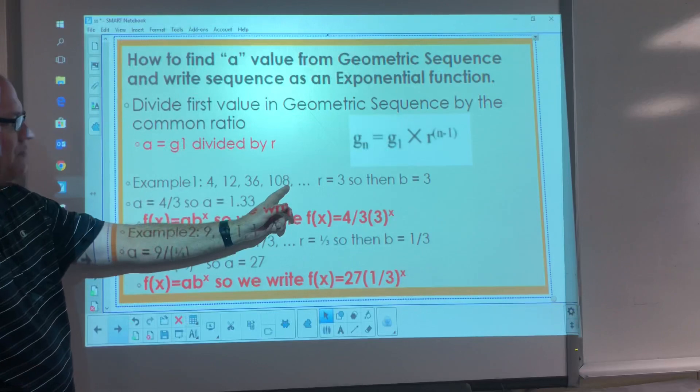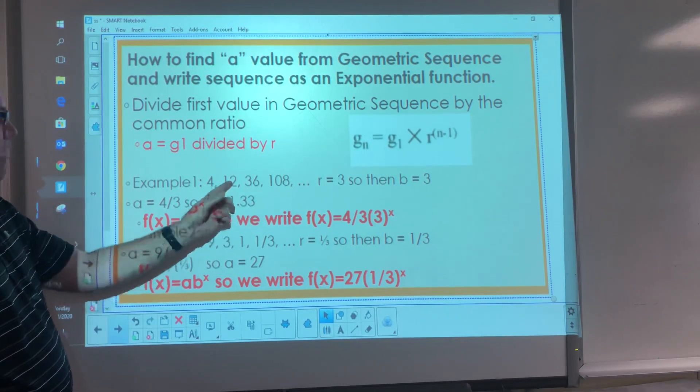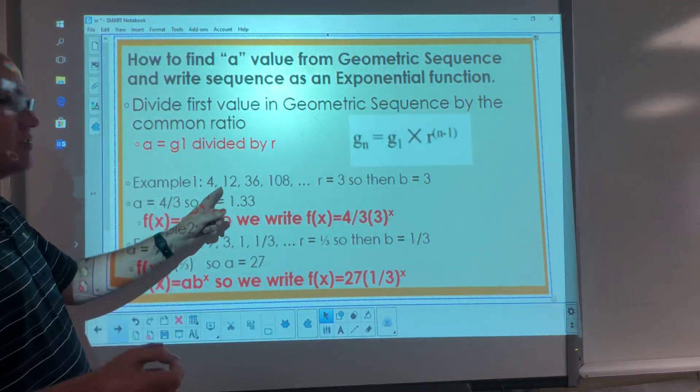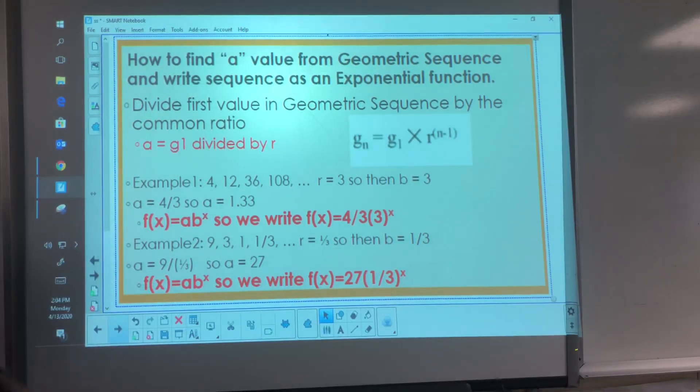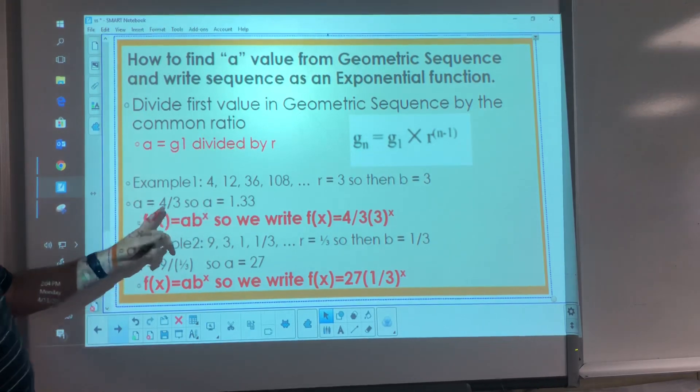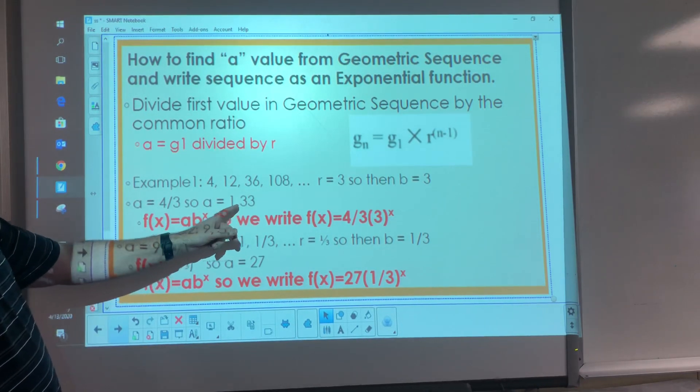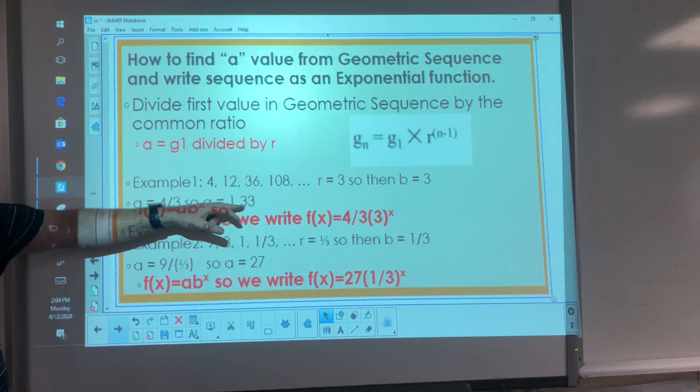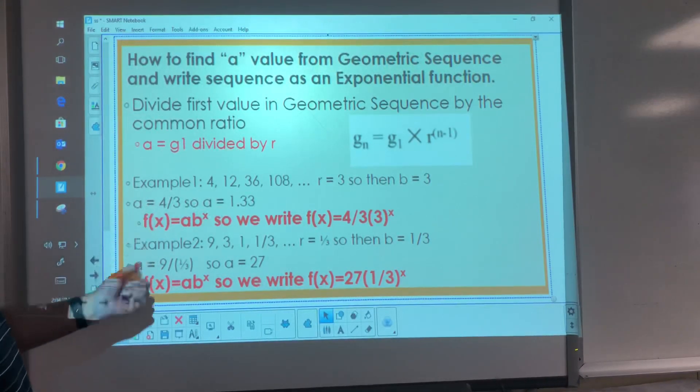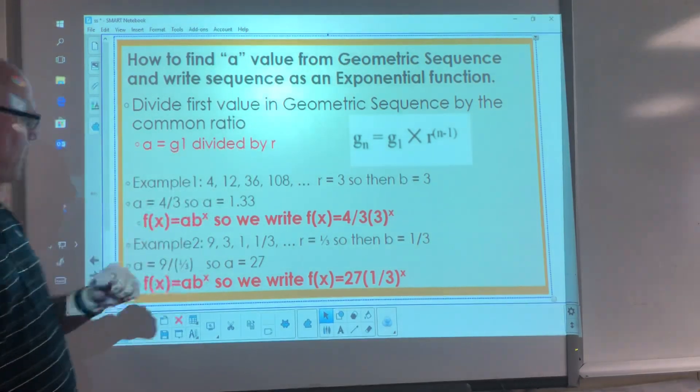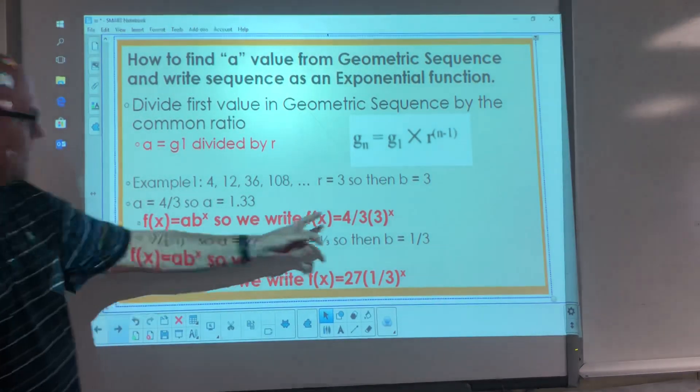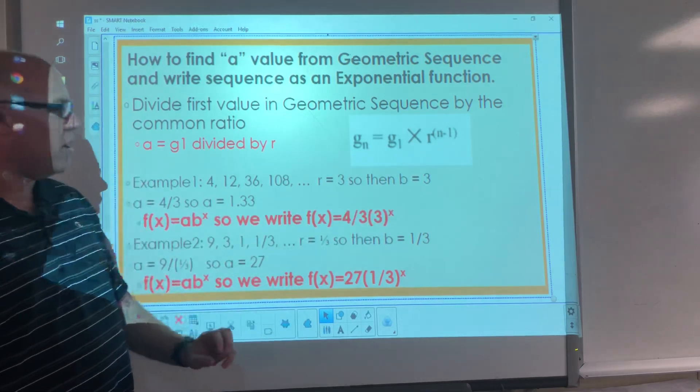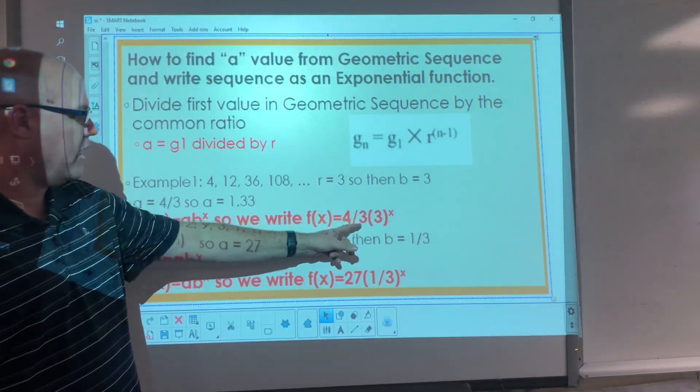Think about that, right? 108 divided by 3, 36. 36 divided by 3, 12. 12 divided by 3 is 4. That was the start of our geometric sequence. But we're going to make this into an exponential function, so we know we can have the input value be 0. So we have to divide 4 by 3, and we get 4 thirds, or we get 1.33. So that is our y-intercept. That's also our a value. Our a value is going to be this 1.33, or you can write it as 4 thirds. And our common ratio is now our constant ratio, so that's the same as the 3 that's inside the parentheses here. So we write this as f(x) equals 4 thirds times 3 to the x power, or you can write it as 1.33 times 3 to the x power.